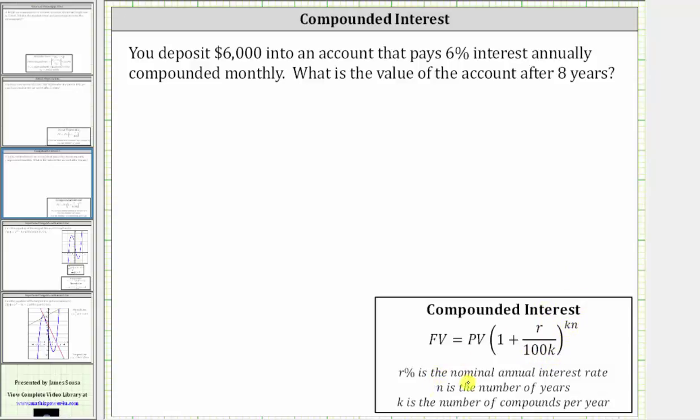Where R percent is the nominal annual interest rate, N is the number of years, and K is the number of compounds per year.